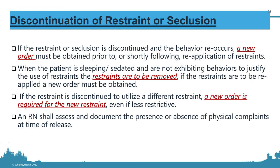If restraints are discontinued and then placed again, you need a new order. For example, if a patient is in four-point locking restraints, they come off for five minutes and then go back on — that requires a new order and a new face-to-face. However, if you are holding a patient to place locking restraints while simultaneously administering chemical restraint, that is one event requiring one face-to-face, though it would require two separate orders — one violent and one chemical.